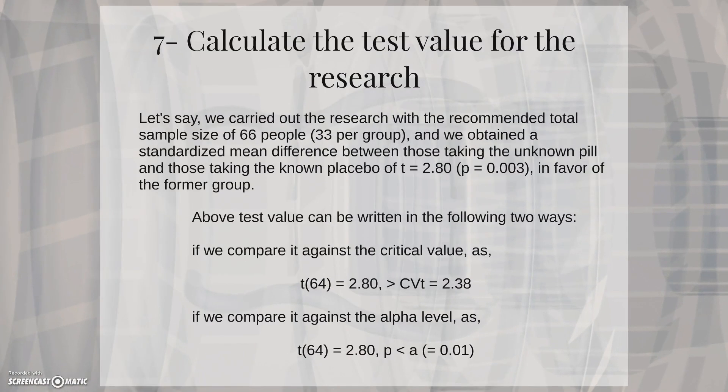The seventh step in the procedure is therefore to calculate the test value for the research. Let's say we carried out the research with a recommended total sample size of 66 people, 33 per group, and we obtain a standardized mean difference between those taking the unknown pill and those taking the known placebo of t equal to 0.80, with a probability of 0.003 in favor of the former group.